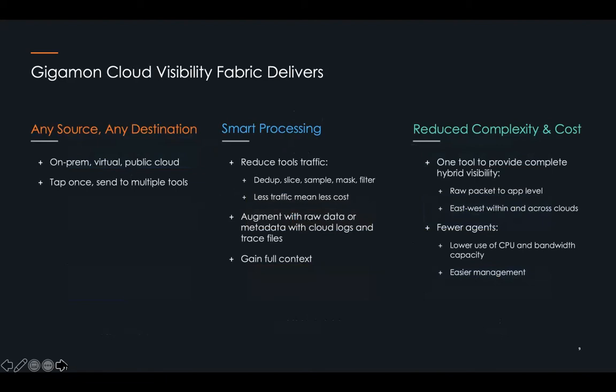Second, the smart processing capability. As we optimize this traffic, we reduce it. We use techniques we've used for years on-premises — like deduplication, slicing, filtering, and sampling — that help us reduce traffic.